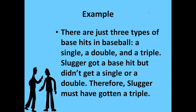Another example: 'There are just three types of base hits in baseball — a single, a double, and a triple. Slugger got a base hit but didn't get a single or a double, therefore slugger must have gotten a triple.' This argument poses a false choice between three alternatives — single, double, or triple — because it ignores the possibility that slugger may have hit a home run. False alternatives can involve more than two choices.